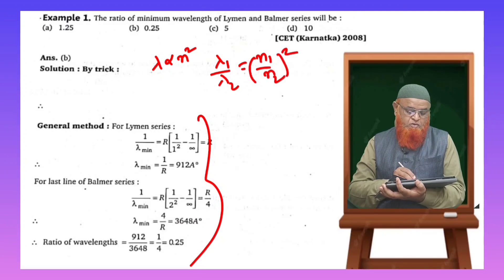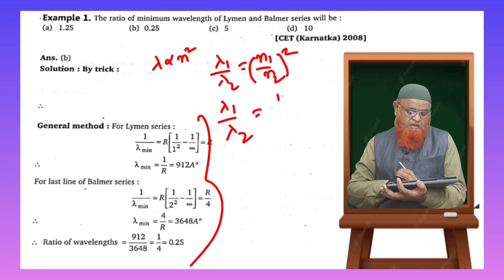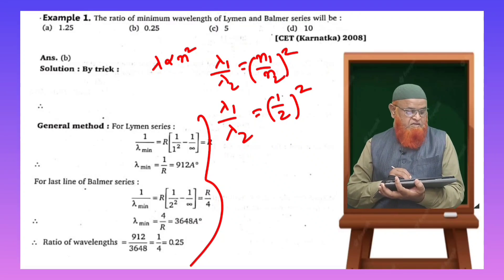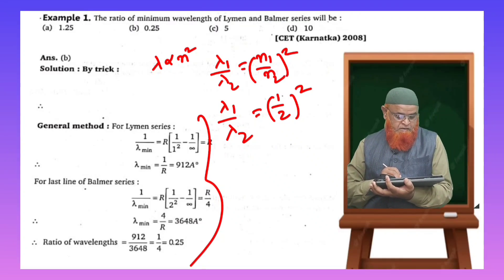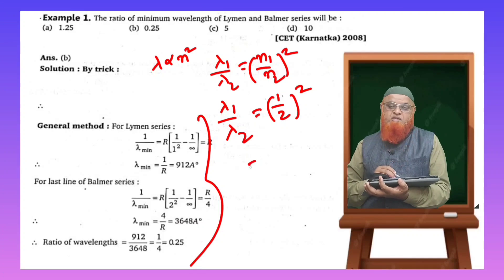So for Lyman series it is 1 by 2 whole square. The wavelength is given here, and the ratio is what he's asking us to find out.